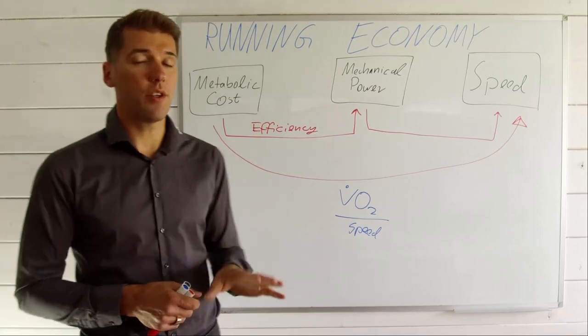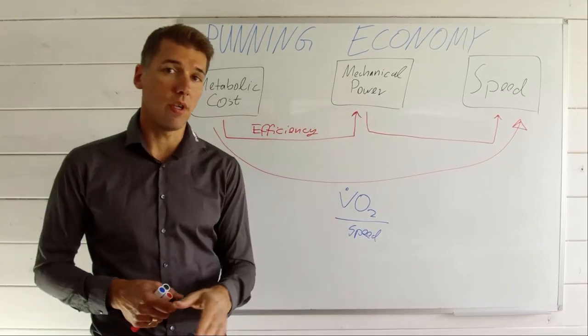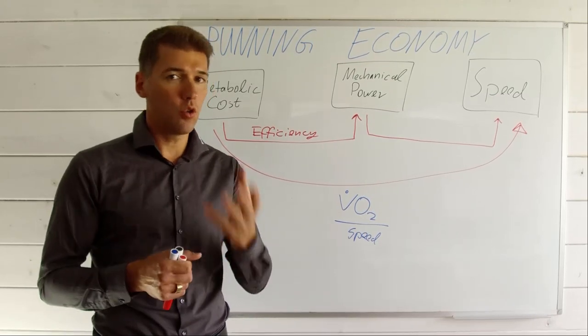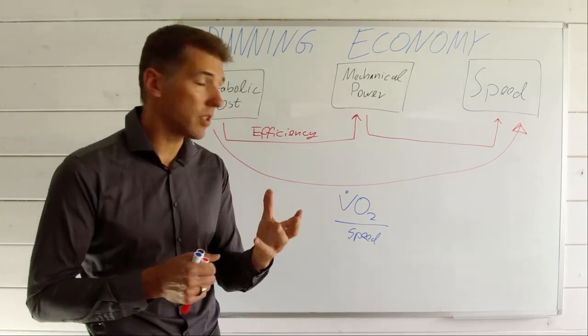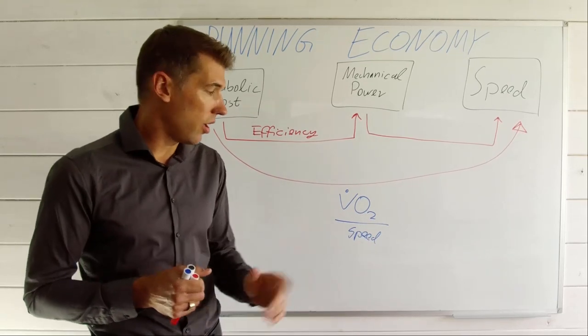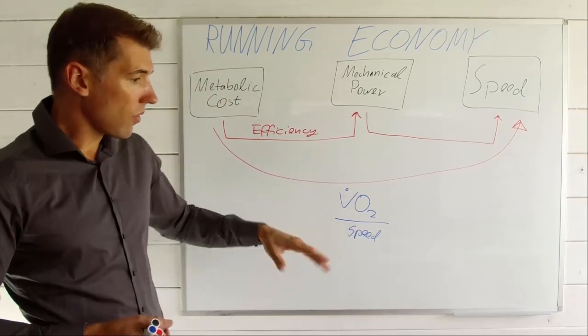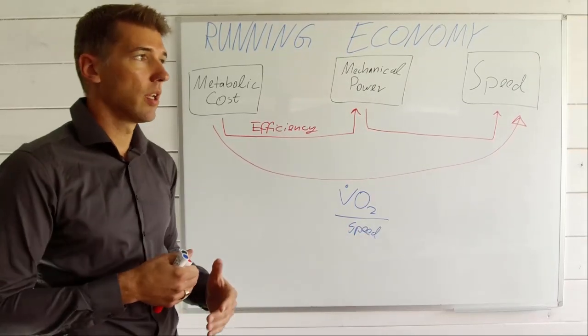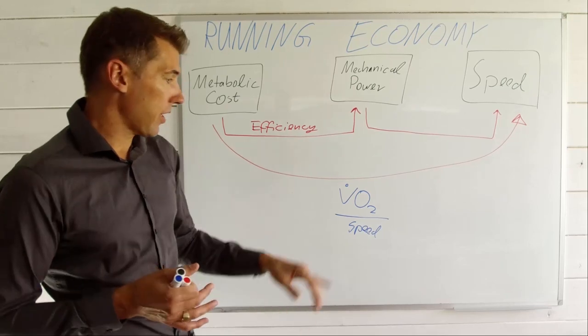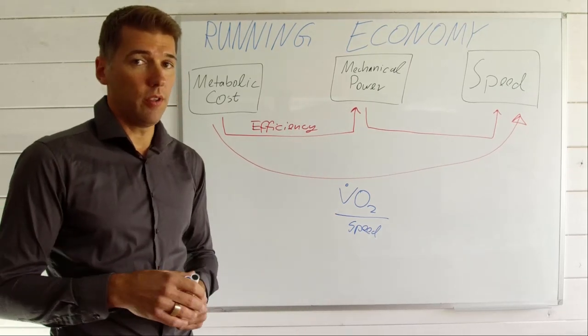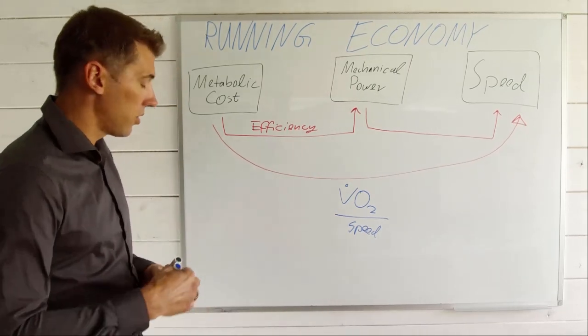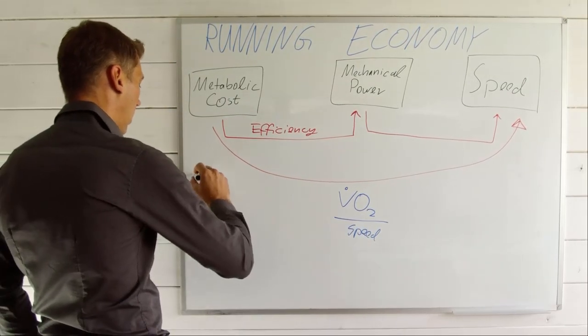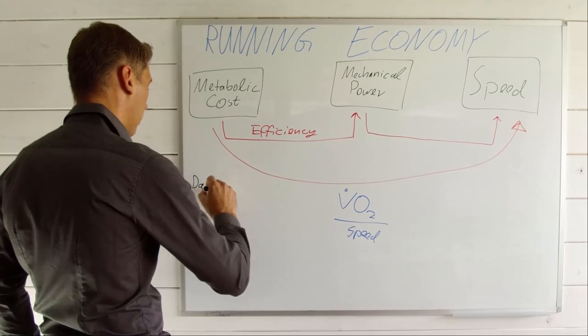The worst thing that can happen to you when you look at running economy is that somebody just takes the raw measured VO2 at the mouthpiece in a lab or something and divides it by the running speed. Because when you look at the comparison, now and after a certain training period, so many factors influence the VO2 value that you basically want to take care of those.